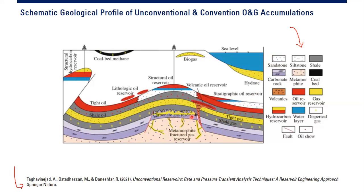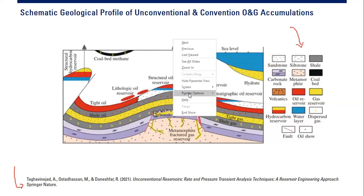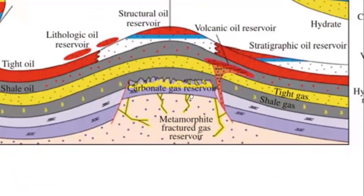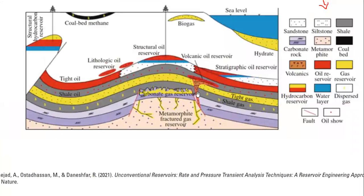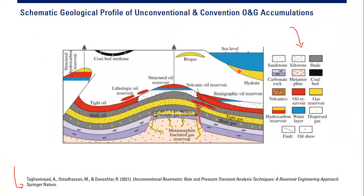We can also have a carbonate reservoir with carbonate gas. Below that, a metamorphic fractured gas reservoir that produces gas — and depending on the permeability or conductivity of the fault, gas can migrate upward and accumulate in the carbonate formation. We also have volcanic oil — oil within volcanic rock, trapped because the adjacent formation is shale. And don't forget hydrates here on the seafloor, with the ocean above.